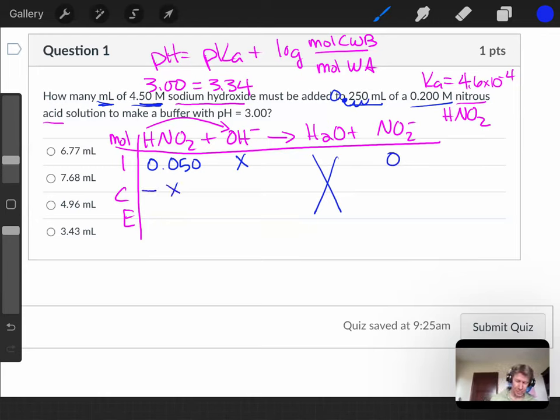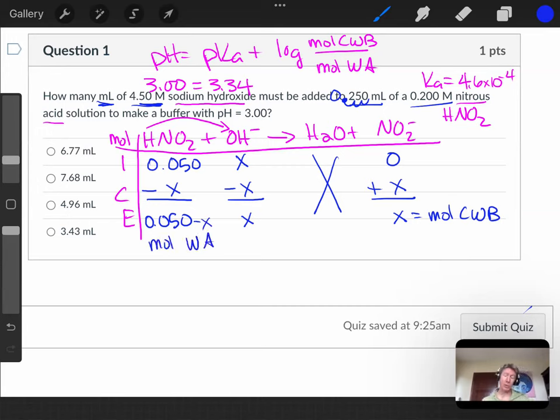Then we do want to end with a buffer. Oh, so this is interesting. This is actually a mole ICE table with X's in it. We don't do these too often, but for making a buffer type problems like this one, we will have to do it. I get 0.050, I get X, and I get X, and this X is my mole of conjugate weak base, minus X there. This is my mole of weak acid, and those are the two numbers I need to figure out in my Henderson-Hasselbalch equation.